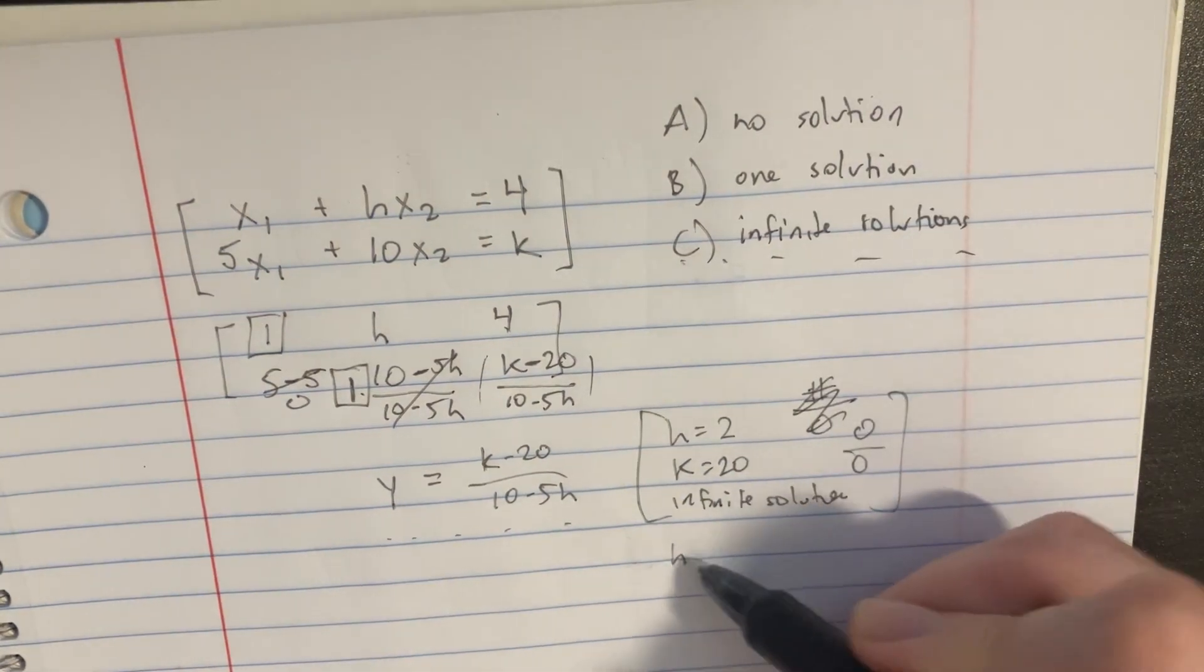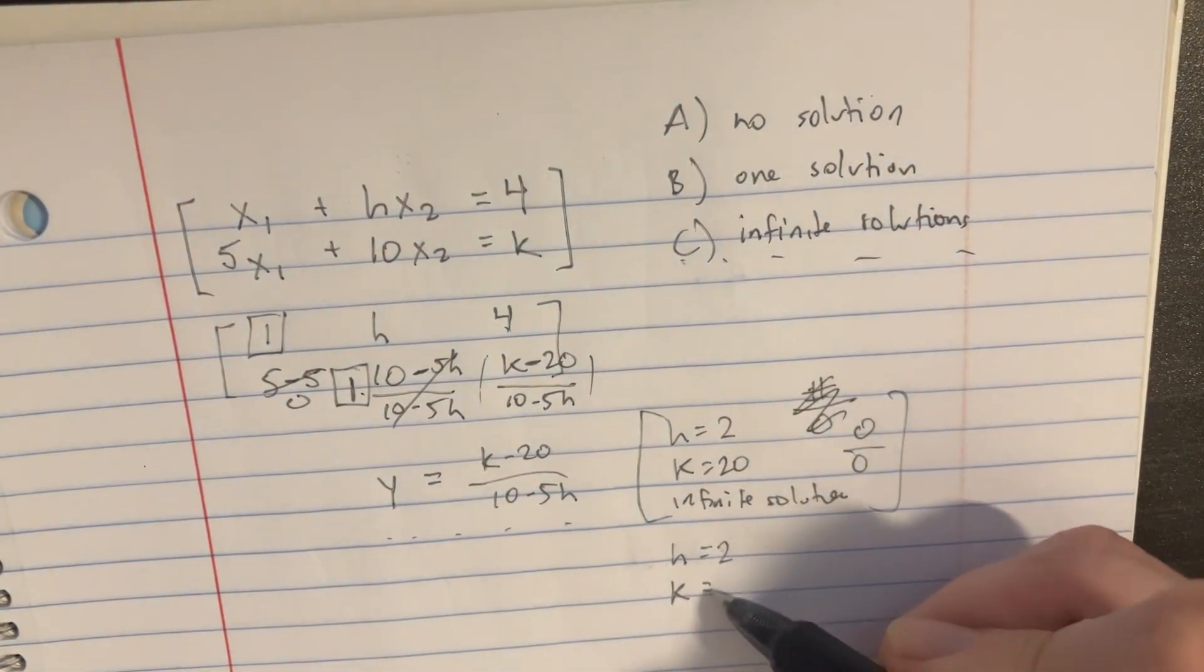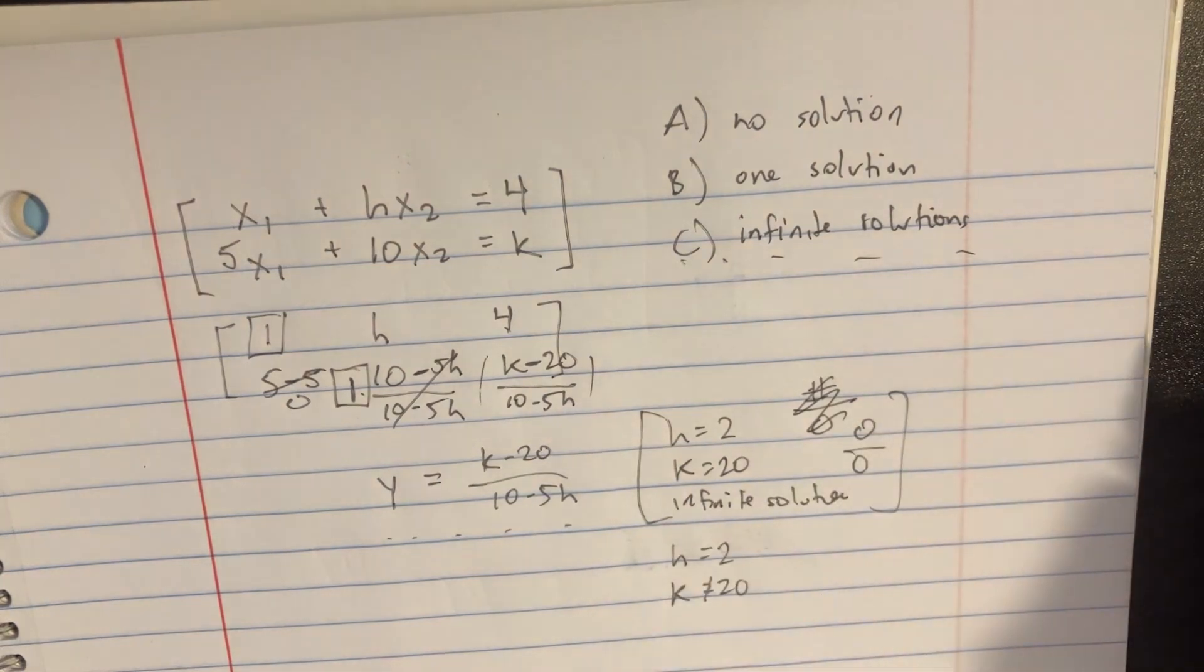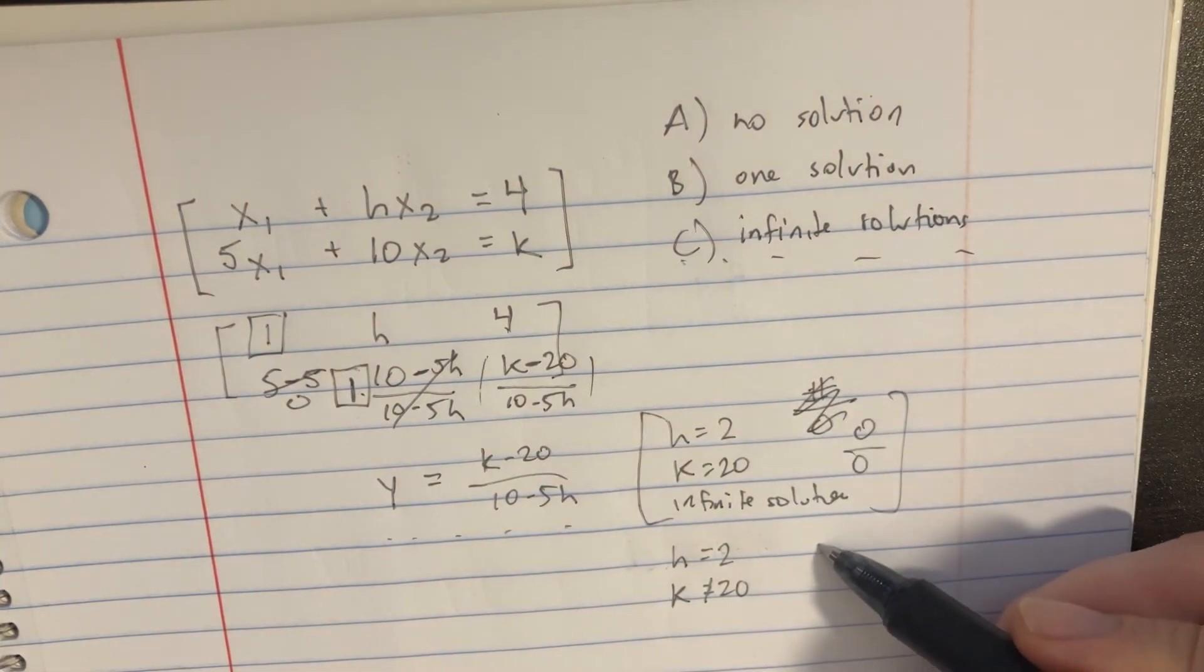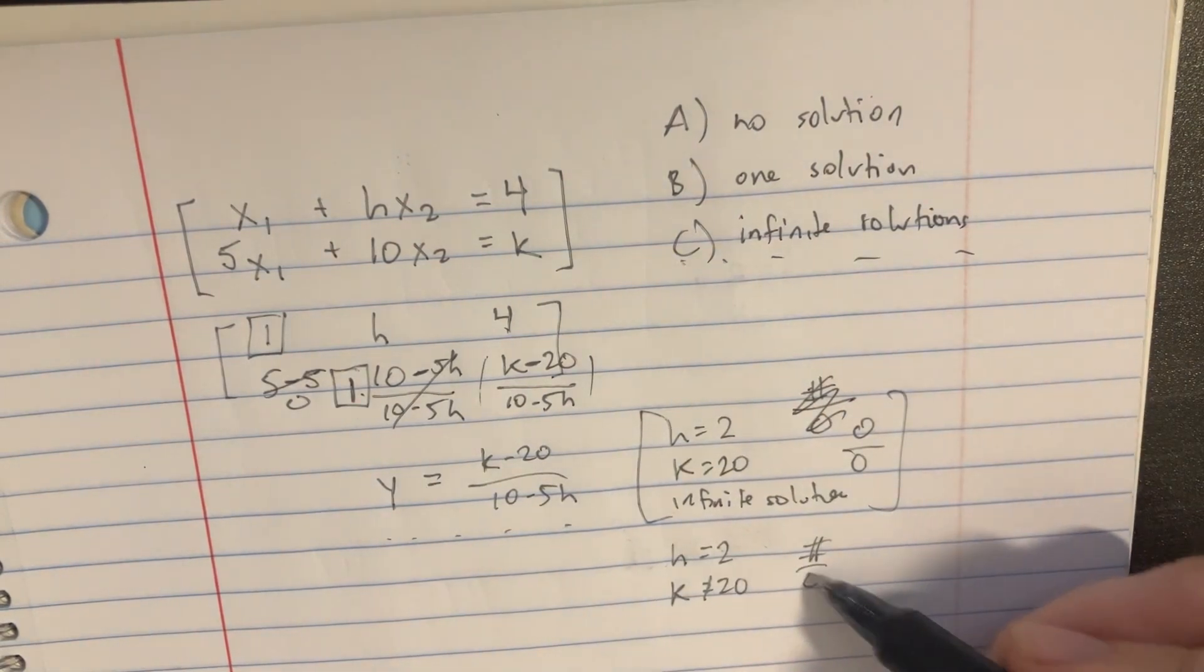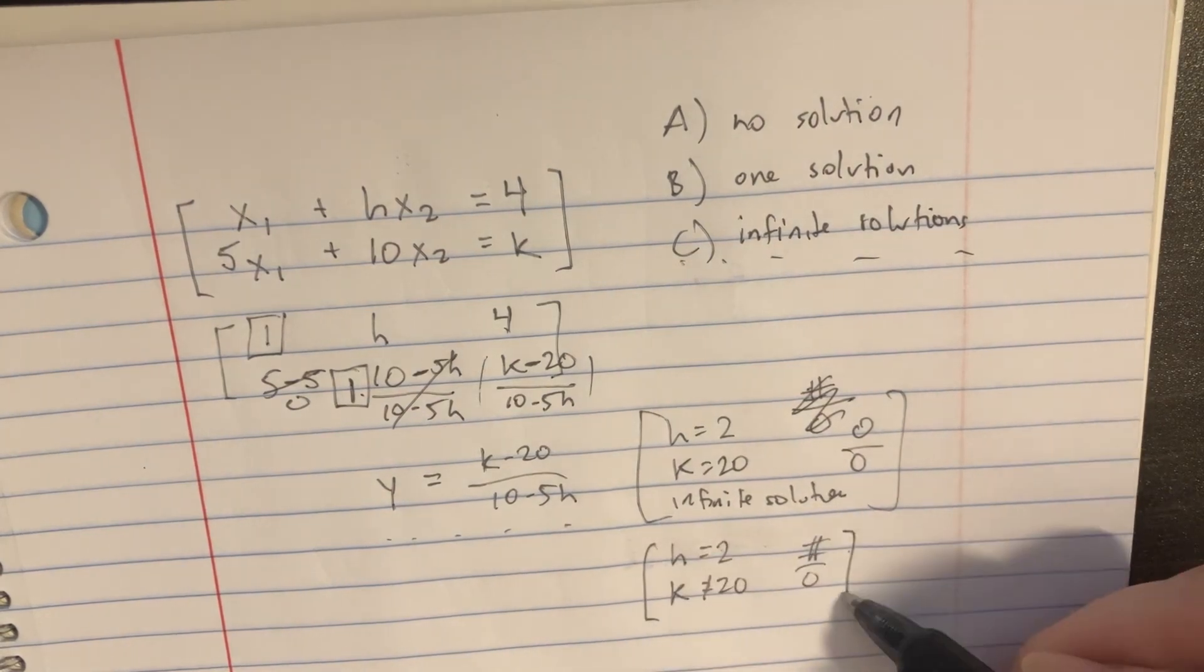But now let's say h equals 2, but k does not equal 20, it's some other number. If that's the case, then we're going to get some actual number divided by 0. So this would give us no solutions.